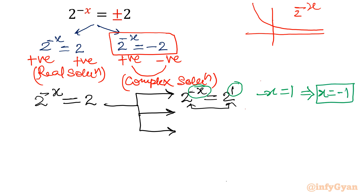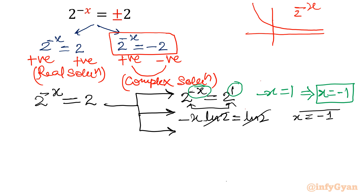The second way is to take the logarithm. We again get minus x equal to 1, so x equal to negative 1.